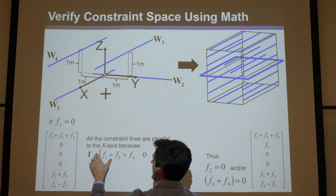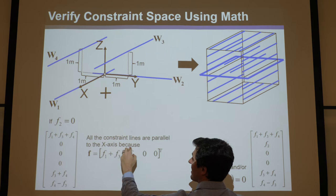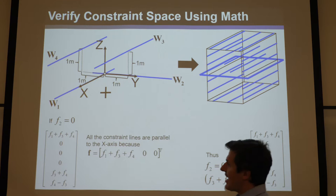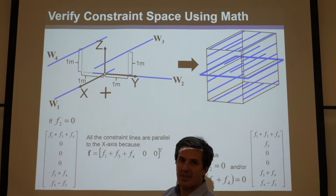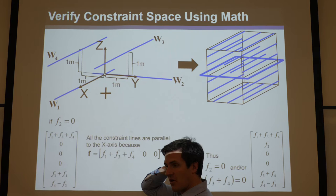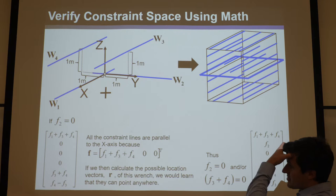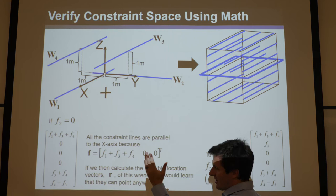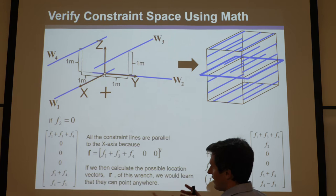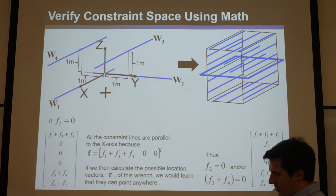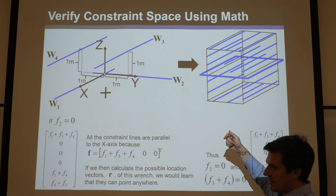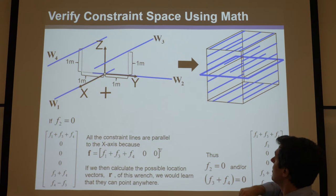If we break this out into its F vector, no matter what F1, F3, and F4 are, this is something in the X direction and the Y and Z directions are zero. So everything in this space that is blue — and everything in the space has to be blue because we enforced that condition — will be parallel and point in the X direction, parallel to the X axis, because they can't have a Y or Z component. And if we calculate the possible location vectors of this wrench, the R vector can point anywhere in space.